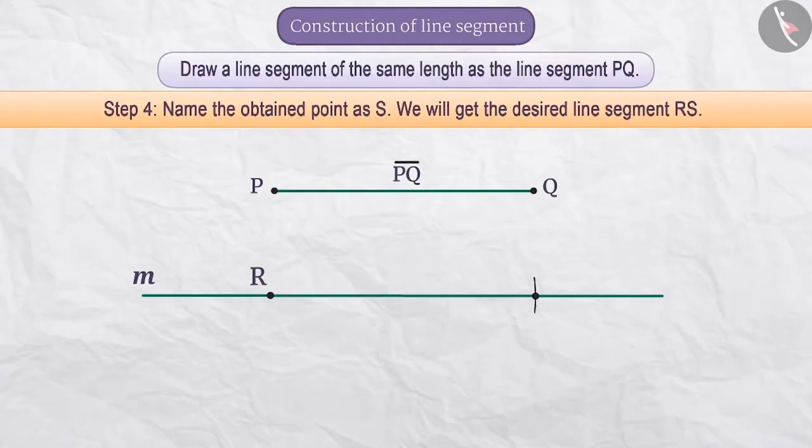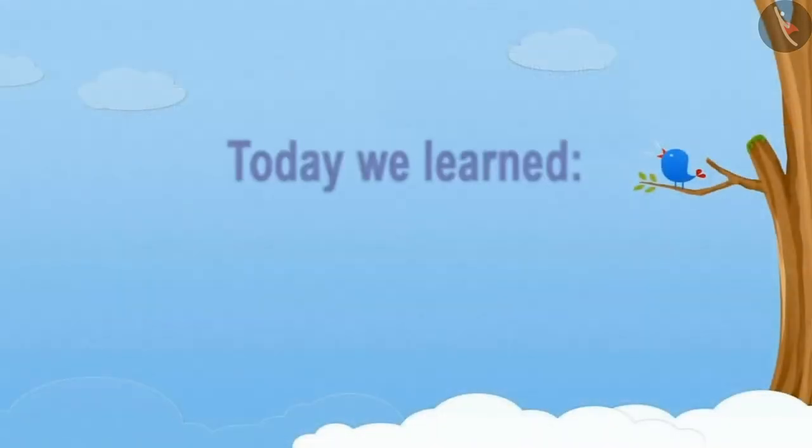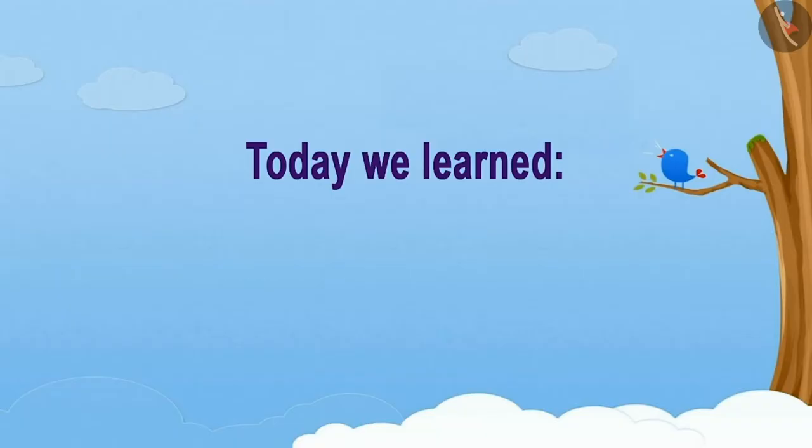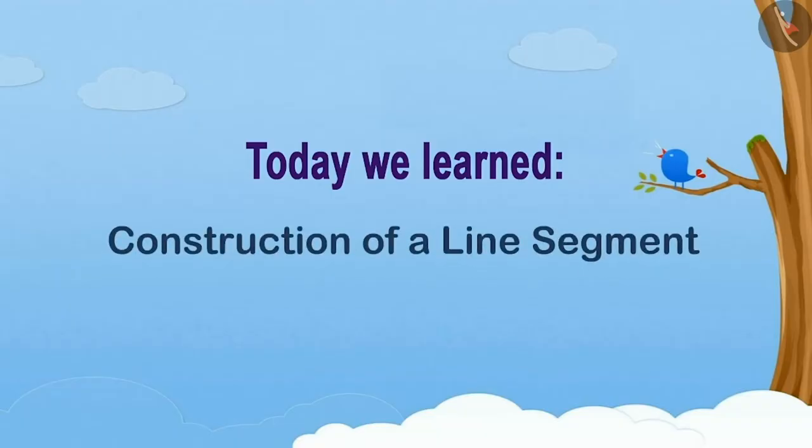Step 4: The point where the arc intersects the line M will be named S. Here we will get line segment RS whose length is equal to given line segment PQ. Now you must have learnt how to draw a line segment. Today we learnt construction of a line segment. In the next video, we will see some interesting examples based on the same.